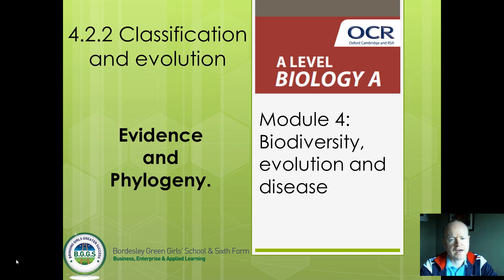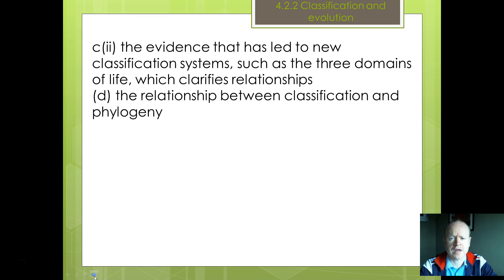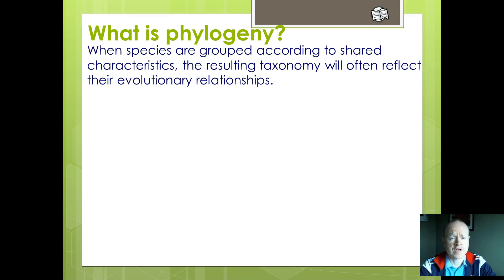Hi, welcome back. We're going to think about evidence of evolution and phylogeny today. Some of the aspects going to be covered are the evidence for new different classification systems, where we get the idea of what we call three domains, and some of the links between classification and phylogeny — so phylogeny, what is phylogeny, or phylogenetics.